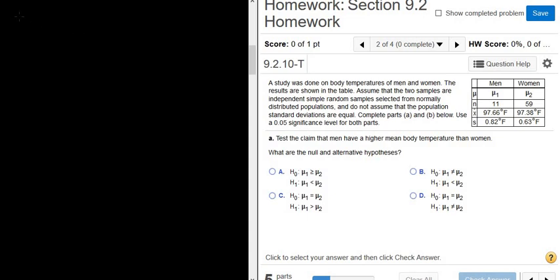So the first step in any hypothesis test is to write down the null hypothesis, which is H sub 0, and the alternative hypothesis, which is H1.